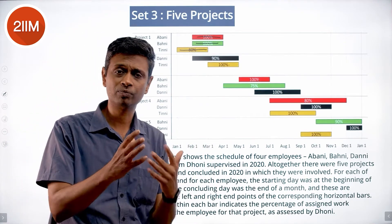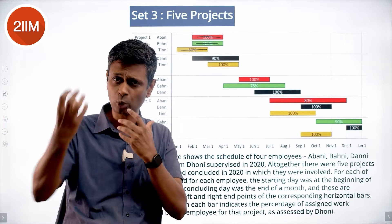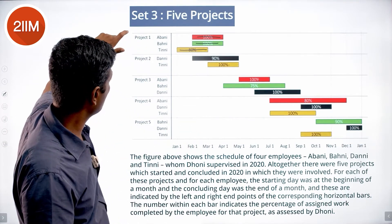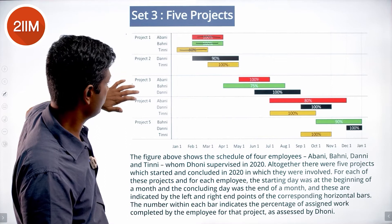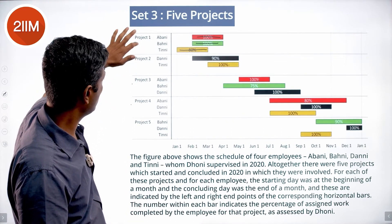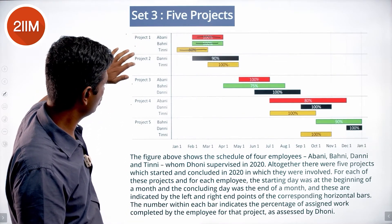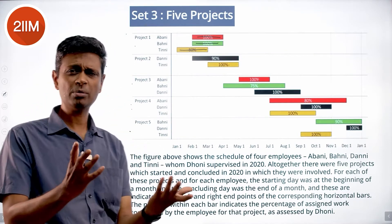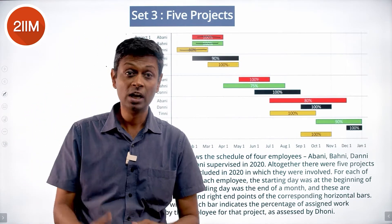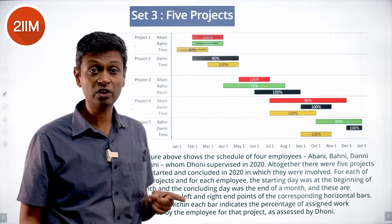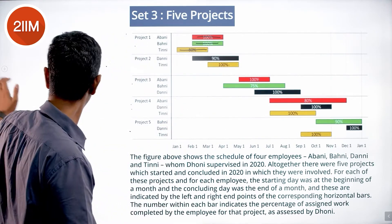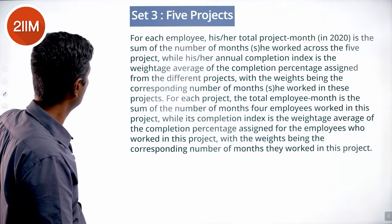They all started and worked at different times and had different project months. So Abani has worked in project one, project three, and project four. Tinni has worked in one, two, four, and five. Each of them has worked in different projects for different timelines and has completed different percentages of the tasks allotted to them — a brilliant chart that captures everything.